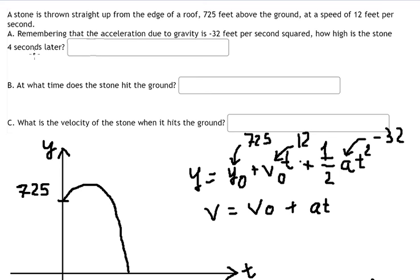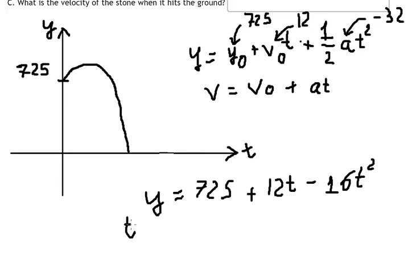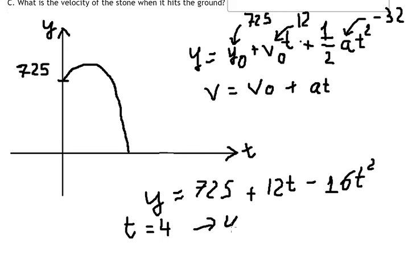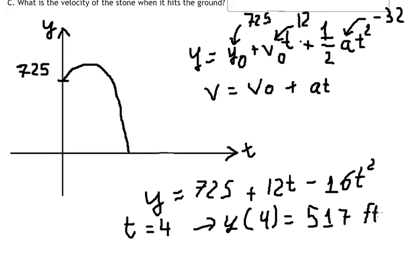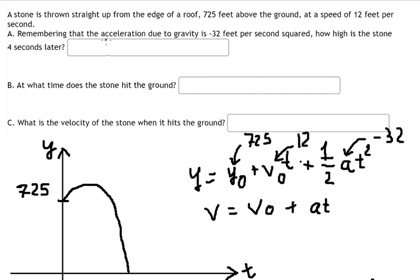For question number one — how high is the stone after four seconds — we put t equals 4 into the equation. We calculate this and get 517 feet, so we write that number in as the answer.